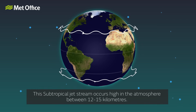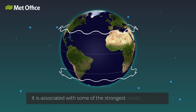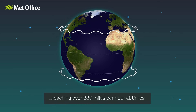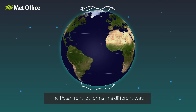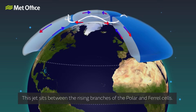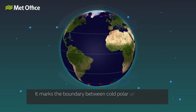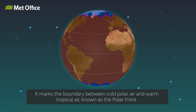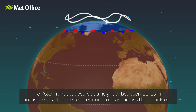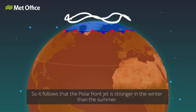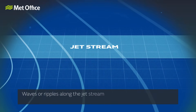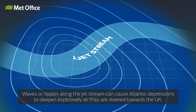This subtropical jet stream occurs high in the atmosphere between 12 to 15 kilometres. It is associated with some of the strongest winds on Earth, reaching over 280 miles per hour at times. As this jet sits between the descending branches of the Hadley and Ferrell cells, there is little associated weather. The polar front jet forms in a different way — it sits between the rising branches of the polar and Ferrell cells, and marks the boundary between cold polar air and warm tropical air, known as the polar front. The polar front jet occurs at a height of 11 to 13 kilometres and is primarily the result of the temperature contrast across the polar front. The stronger the temperature contrast, the stronger the jet, so the polar front jet is stronger in winter than in summer. Waves or ripples along the jet stream can cause Atlantic depressions to deepen explosively as they are steered towards the UK.